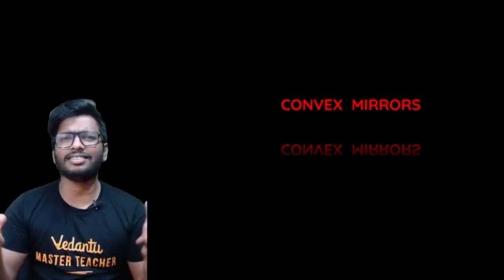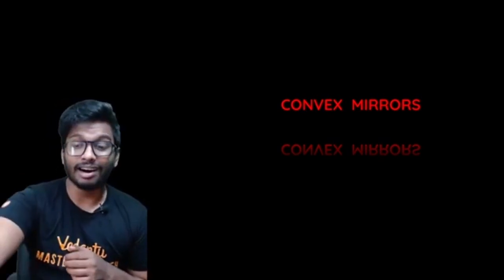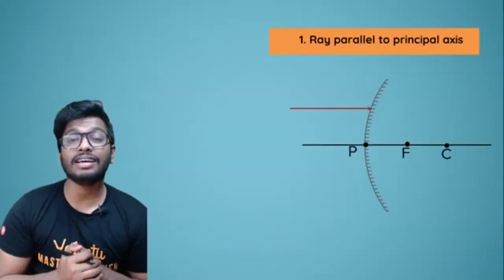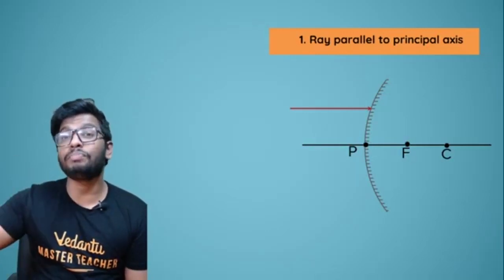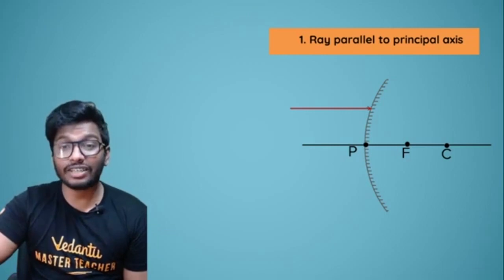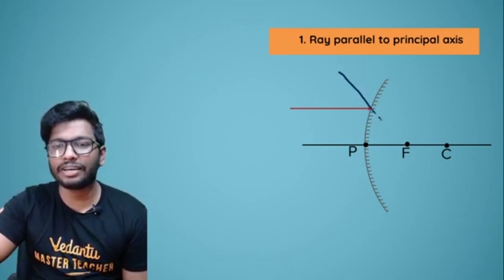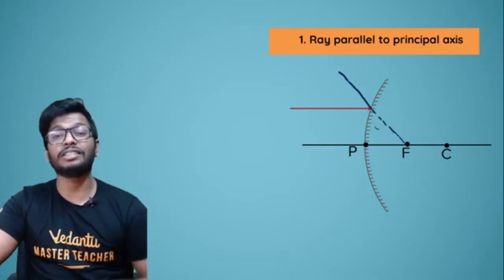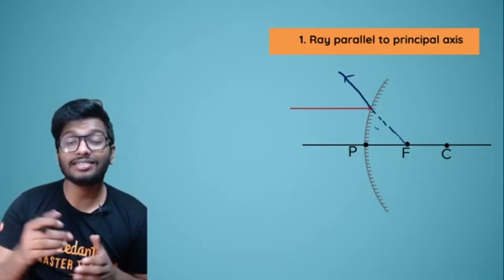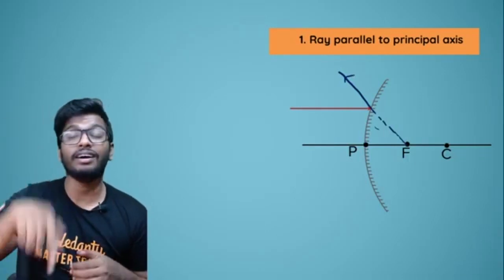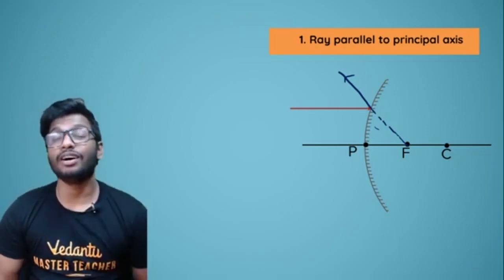Now for a convex mirror — what does the incident ray look like and what path does the reflected ray take? The first case: when the ray of light is parallel to the principal axis, after reflection the ray of light will appear to pass through the focus. It's not actually passing through the focus, but it appears to. A convex mirror is always a diverging mirror.